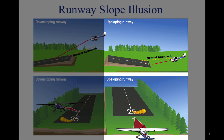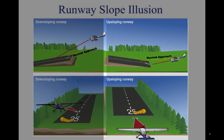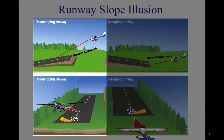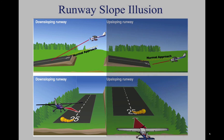An up-sloping runway, up-sloping terrain, or both can create an illusion that the aircraft is at a higher altitude than it actually is. The pilot who does not recognize this illusion will fly a lower approach. Down-sloping runways and down-sloping approach terrain can have the opposite effect.